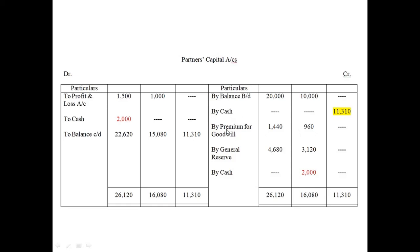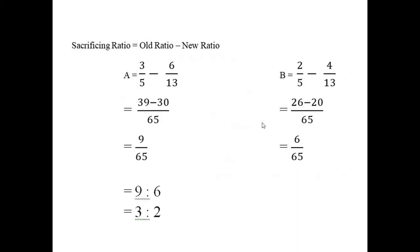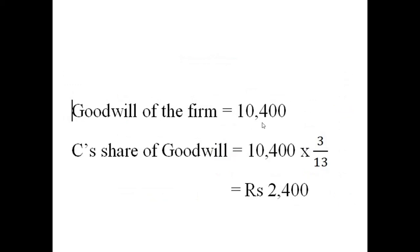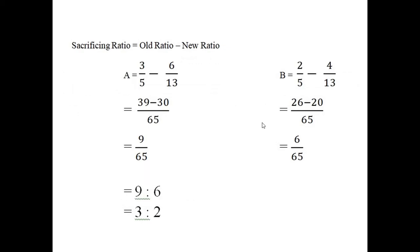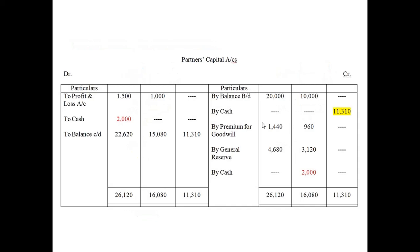After that, we write 'By Premium for Goodwill.' Now we have to calculate the goodwill amount for C. The total goodwill of the firm is already given as 10,400. C is coming for a 3/13th share, so C's share of goodwill will be 2,400. This 2,400 will be shared between A and B as per the sacrificing ratio 3:2, giving 1,440 and 960 respectively.